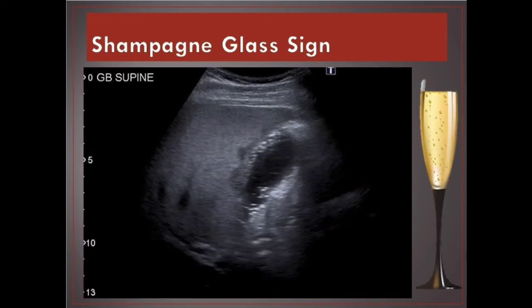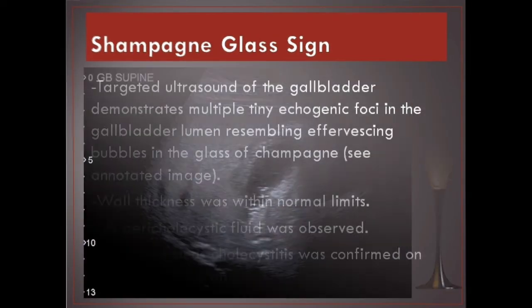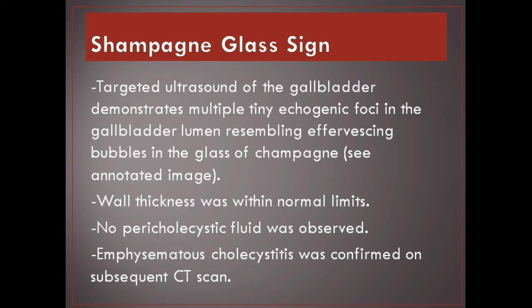Champagne glass sign. Targeted ultrasound of the gallbladder demonstrates multiple tiny echogenic foci in the gallbladder lumen resembling effervescing bubbles in a glass of champagne. Wall thickness was within normal limits and no pericholecystic fluid was observed. Emphysematous cholecystitis was confirmed on subsequent CT scan.